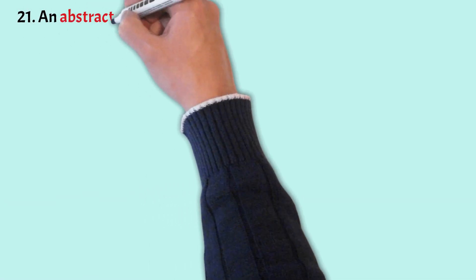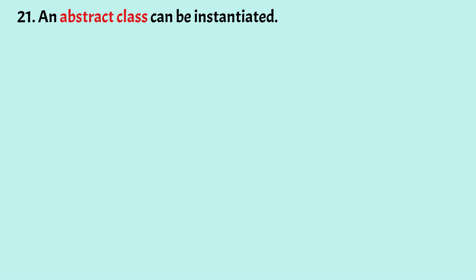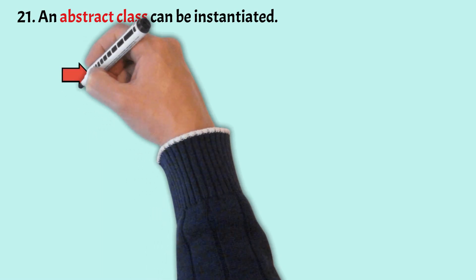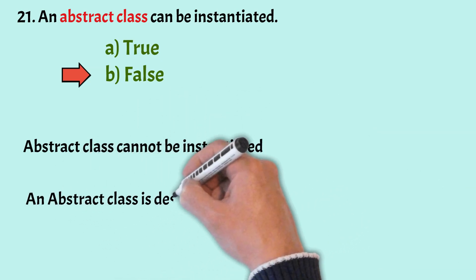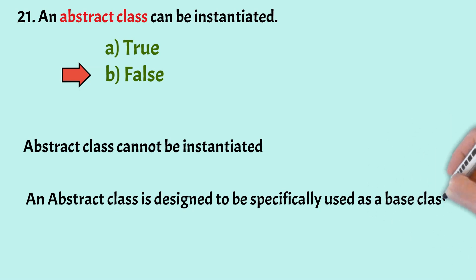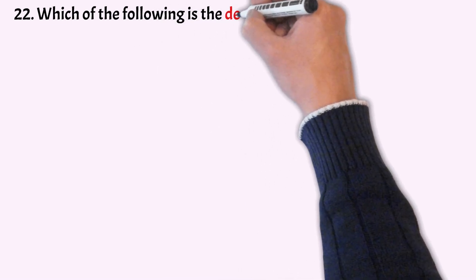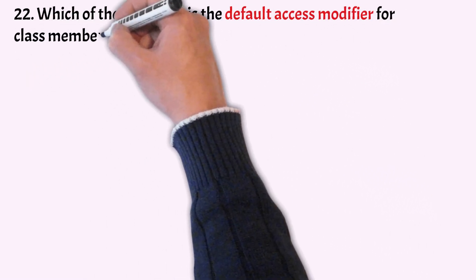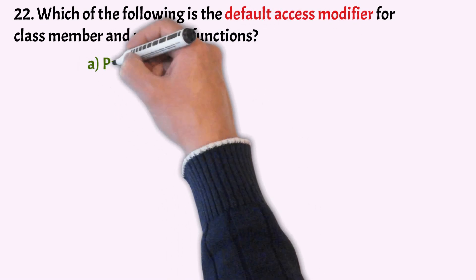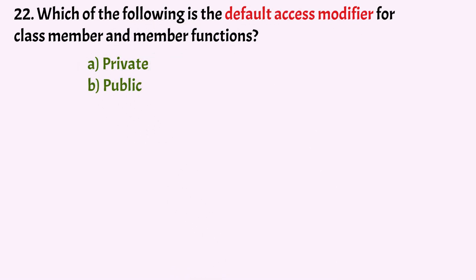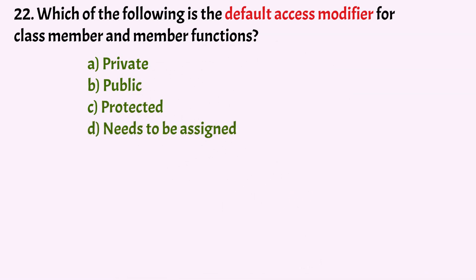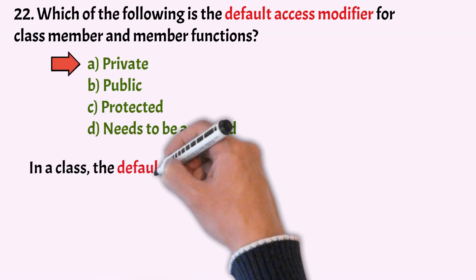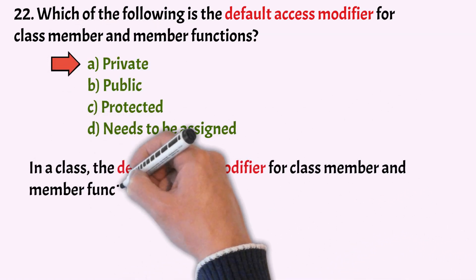Can an abstract class be instantiated? An abstract class is designed to be specifically used as a base class, so it cannot be instantiated. The next question is: which of the following is the default access modifier for class members and member functions? The options are private, public, protected and needs to be assigned. The correct answer is option A, that is private. In a class, the default access modifier is private, and private members are hidden from the outside world.